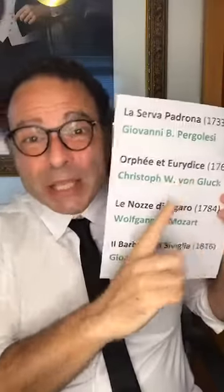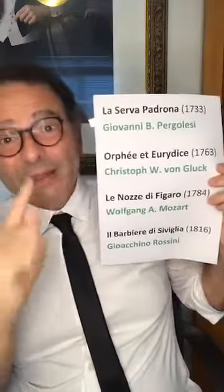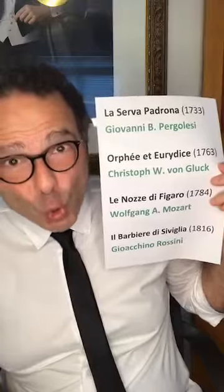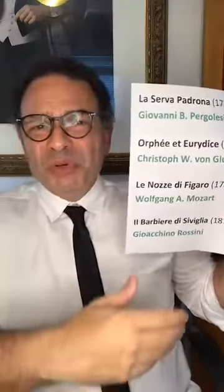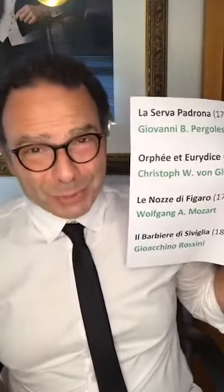Now entering the classical period, we get to Orfeo ed Euridice — yes, it's Orpheus again, the same Greek myth — this time by Christoph Willibald von Gluck. It takes the French tradition of simplifying opera, with lots of ballet. Why simplifying? Because during the Baroque period, the singer became the center of the operatic universe, sometimes more important than the composer.